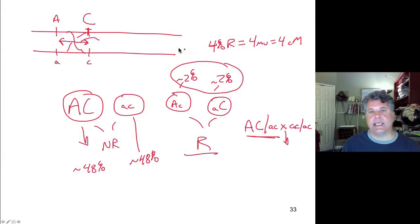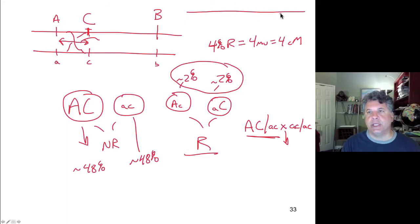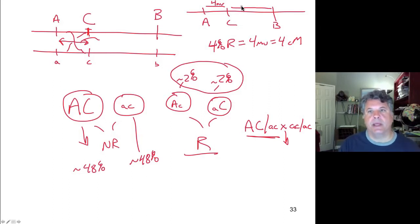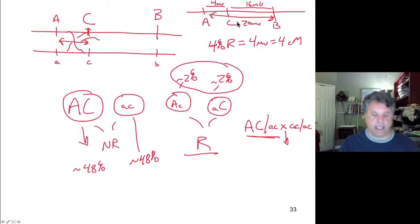We can do the same for the C and B genes and deduce the map distance between them. With B positioned over here, the A gene at one end, the C gene at 4 map units from A, and the B gene approximately 16 map units from C, the A to B distance would be approximately 20 map units. In this way we build up a consistent genetic map of the chromosome based on the positions of genes bearing alleles we've been monitoring.